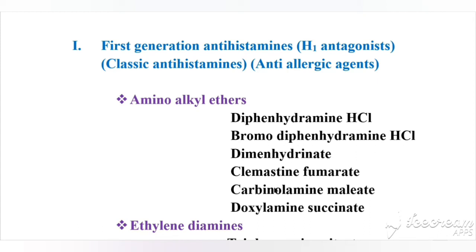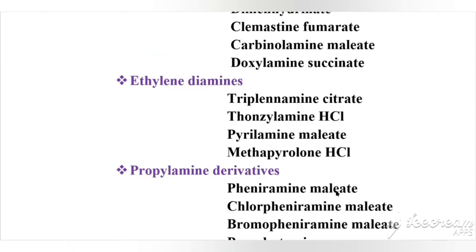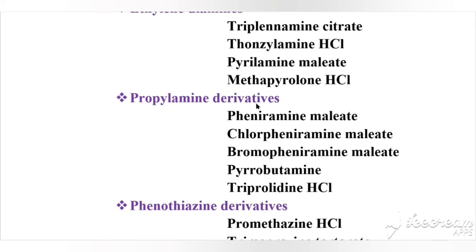Continuing amino alkyl ethers examples: carbinoxamine maleate and doxylamine succinate. The second subtype is ethylenediamines, with examples tripelennamine citrate, tonsylamine hydrochloride, pyrylamine maleate, and methapyrilene hydrochloride. The third subtype is propylamine derivatives, with examples pheniramine maleate, chlorpheniramine maleate, brompheniramine maleate, pyrobutamine, and triprolidine hydrochloride.